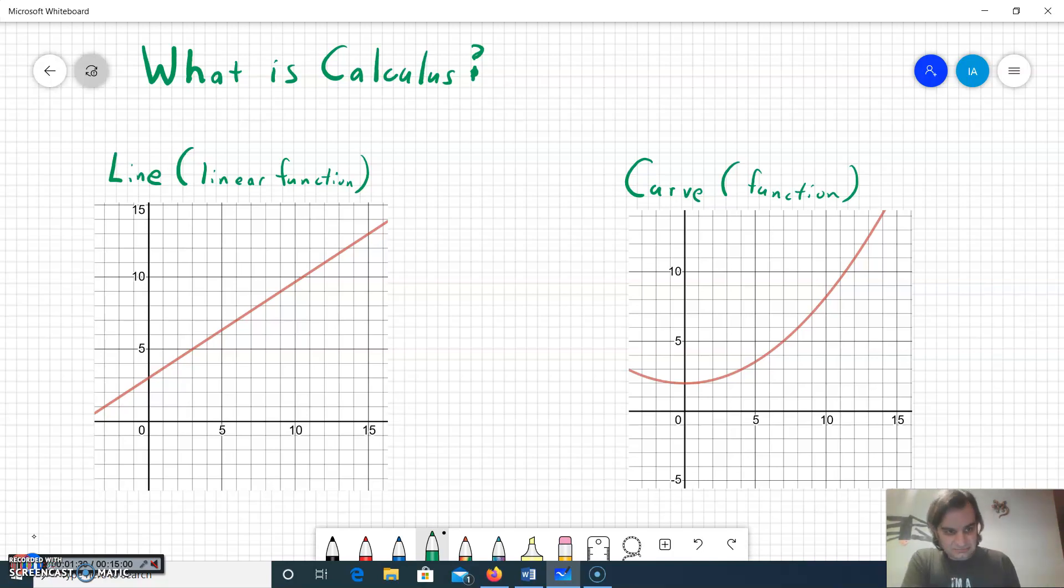And the linear has a special property in the fact that it has a slope that is constant. Okay, so over here with the line we'll say it has a constant slope.